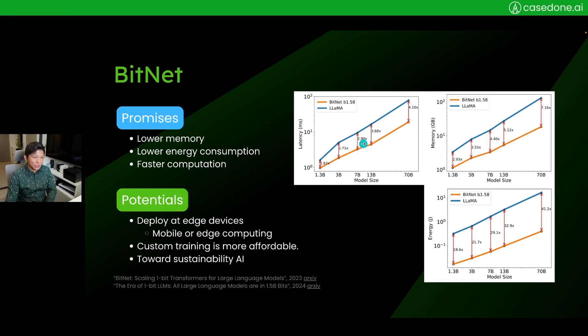On average, it's about 3x to 4x faster. From the trend I see here, the larger the model size, the more you save in terms of latency. In terms of memory, the larger the model, the more memory the BitNet can save. In terms of energy consumption, it has reached up to 30x and 40x less energy needed, which is very important for companies walking down the path of sustainability.